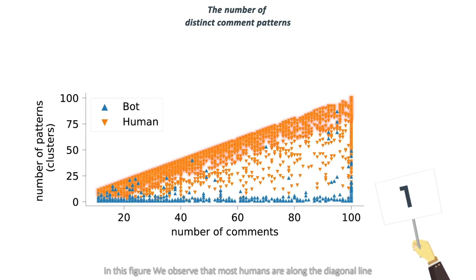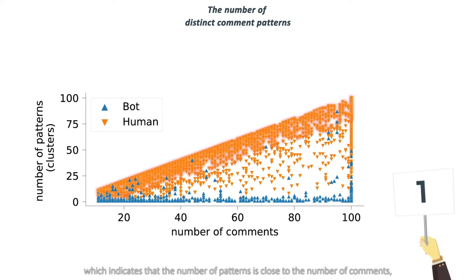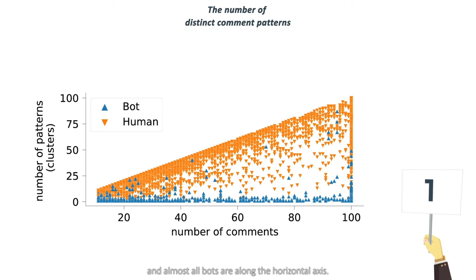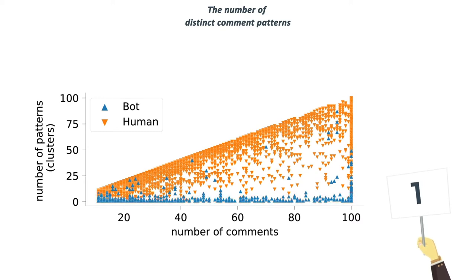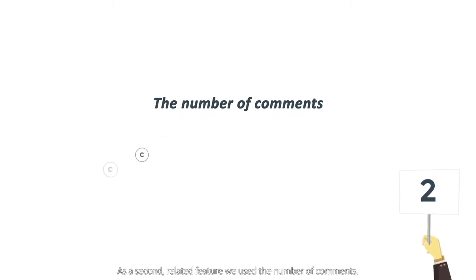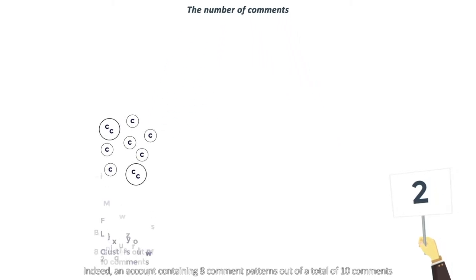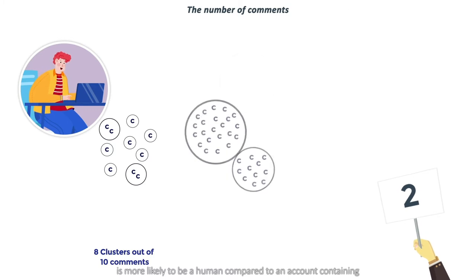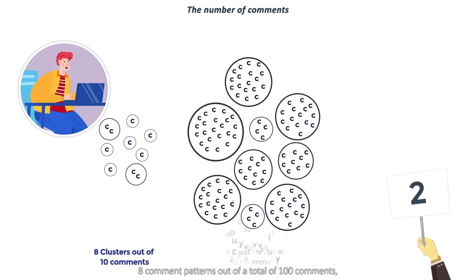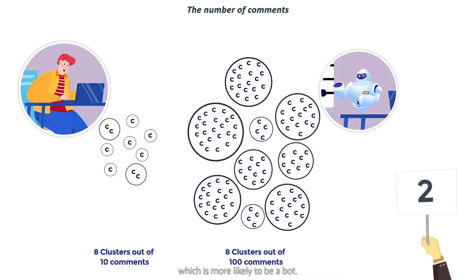In this figure, we observed that most humans are along the diagonal line, which indicates that the number of patterns is close to the number of comments, and almost all bots are along the horizontal axis. This means that the number of comment patterns for bots remains stable and low regardless of the number of comments. As a second related feature, we used the number of comments. An account containing 8 comment patterns out of 10 comments is more likely to be a human, compared to an account with 8 comment patterns out of 100 comments, which is more likely to be a bot.